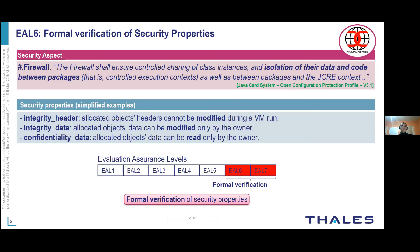The main security aspect of Java card virtual machines is this isolation property between contexts, ensured by the firewall as stated by the open configuration protection profile that instantiates the common criteria requirements for Java card systems. These common criteria mandate the usage of formal methods for the verification of such security properties for the highest assurance levels starting from EL6 and EL7. For clarity, let's consider three simple security properties: integrity header states that object headers should not be modified during VM execution; integrity data states that an object's body cannot be modified unless by the owning context; and confidentiality data states that object data cannot be read unless by the owner context.